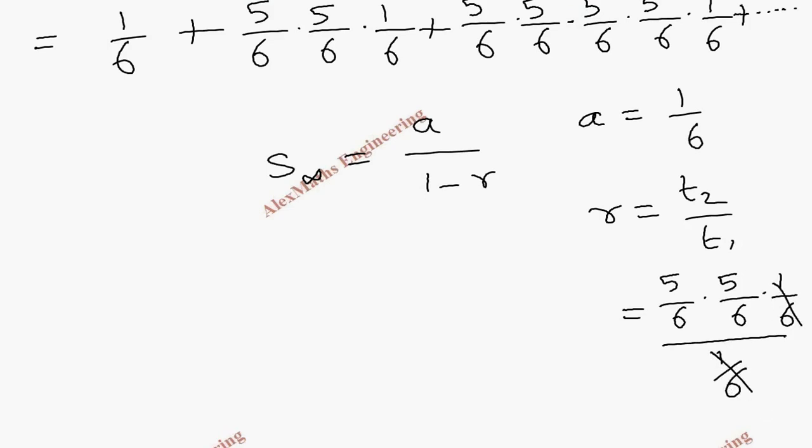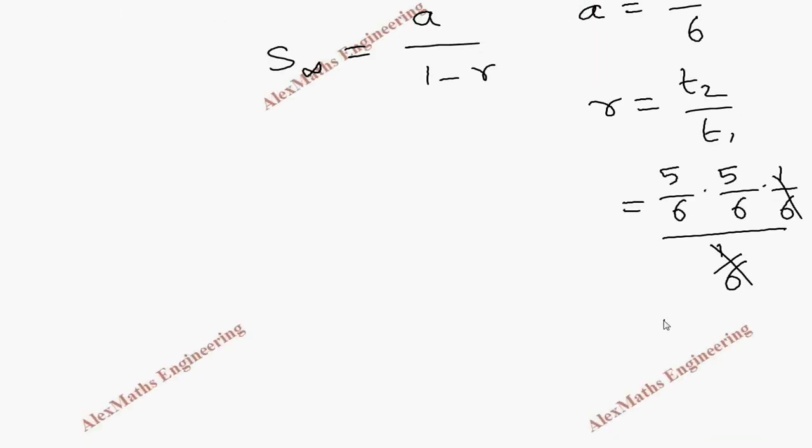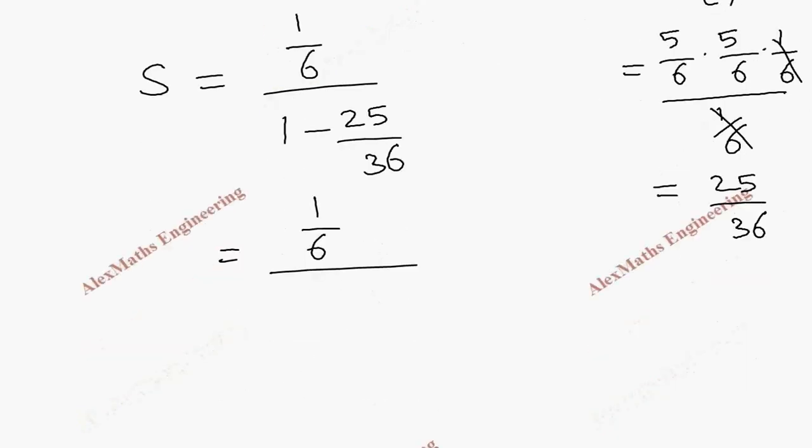The second term is 5 by 6 into 5 by 6 into 1 by 6, divided by 1 by 6. We can cancel this, so the remaining is 25 by 36. Now the sum becomes A is 1 by 6 divided by 1 minus R, which is 25 by 36. We're going to take LCM. The LCM is 36. This is 36 minus 25.